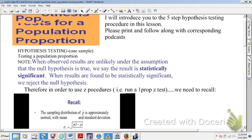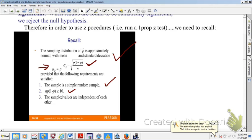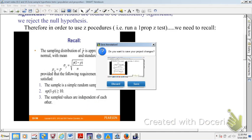So therefore, in order to use Z procedures, i.e. run a one-prop-Z test that we're about to do, we recall things from the central limit theorem. Recall that the sampling distribution of p-hat is approximately normal with mu sub p-hat equaling to p and sigma sub p-hat equaling to this expression, the standard error of the distribution. Bear that in mind. Provided the following requirements are satisfied, so provided that NPQ is greater than 10 and that you're dealing with a simple random sample and that your sampled values are independent of one another. So you're not dealing with mothers and daughters or twins or someone that's genetically linked with regard to the parameter of interest in your sample.